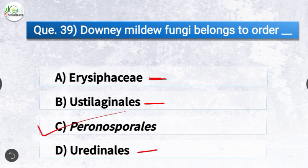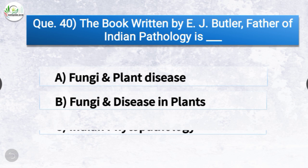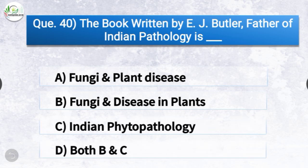Question number forty: The book written by EJ Butler, father of Indian plant pathology, is dash. The options are Fungi and Plant Disease, Fungi and Disease in Plants, Indian Phytopathology, or both B and C. The correct answer is option B, Fungi and Disease in Plants. The book written by EJ Butler is Fungi and Disease in Plants, whereas the book written by BB Mundkar is known as Fungi and Plant Disease.